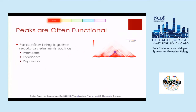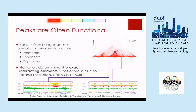Why do we care about these peaks? They've been found to bring together regulatory elements such as promoters, enhancers, repressors, and so forth. Unfortunately, because of the really coarse resolution of Hi-C, it's very difficult to figure out the exact interacting elements. These peaks tend to be anywhere between 5KB to 50KB or more. There's only been one map generated so far that has 5KB peaks, and even these are incredibly noisy. So generally, you want to call them anywhere between 10 and 50KB.